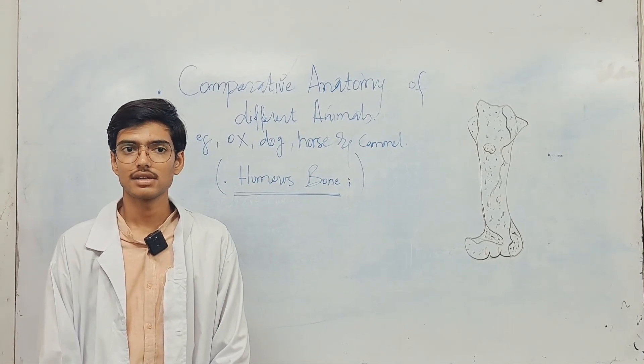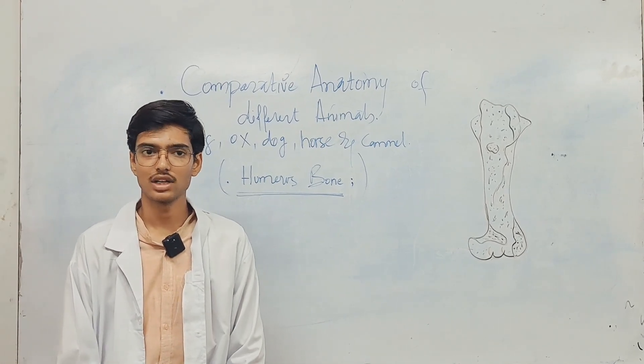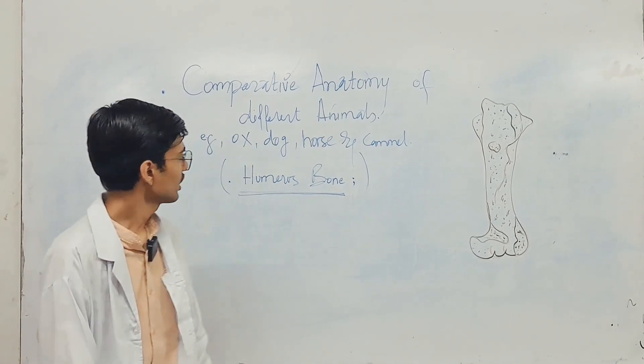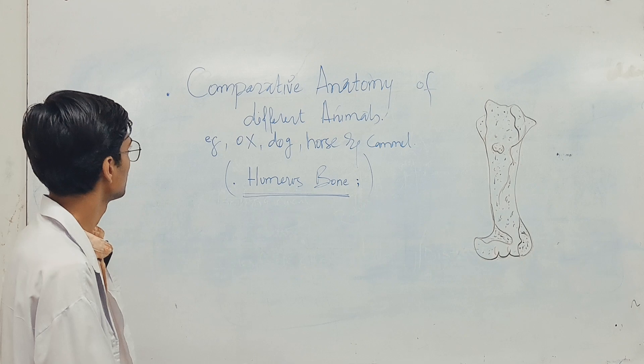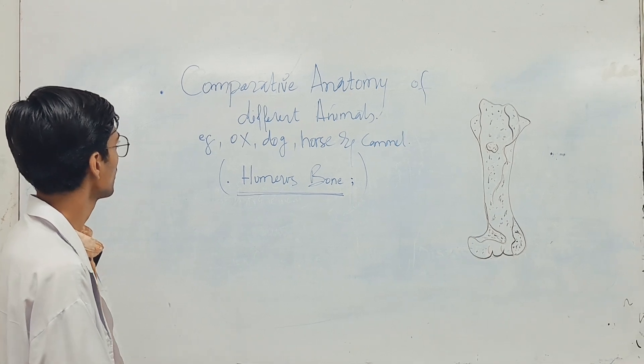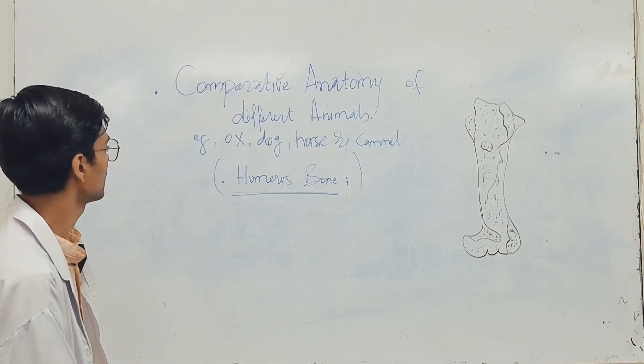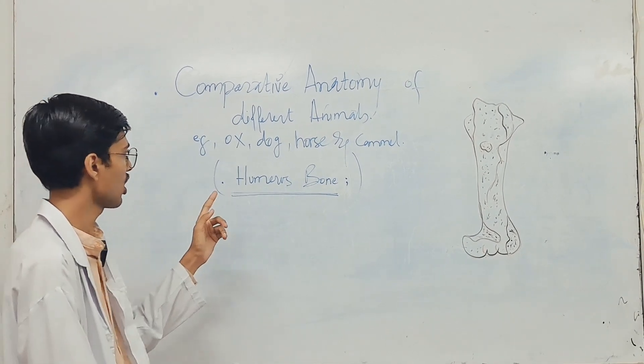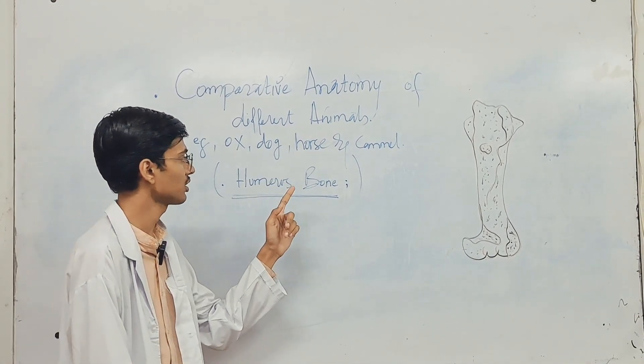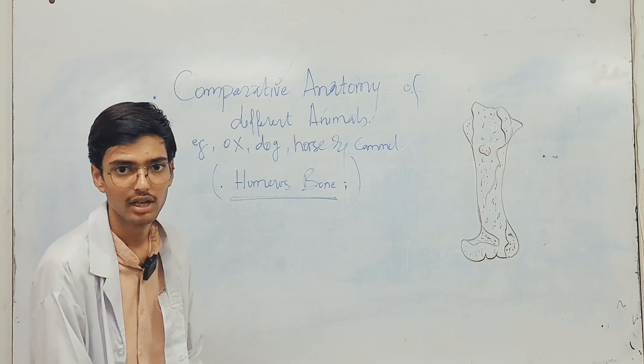Assalamualaikum dear friends, myself Rishal. Today I am going to give a little demo on comparative anatomy of different animals, for example ox, dog, horse and camel.